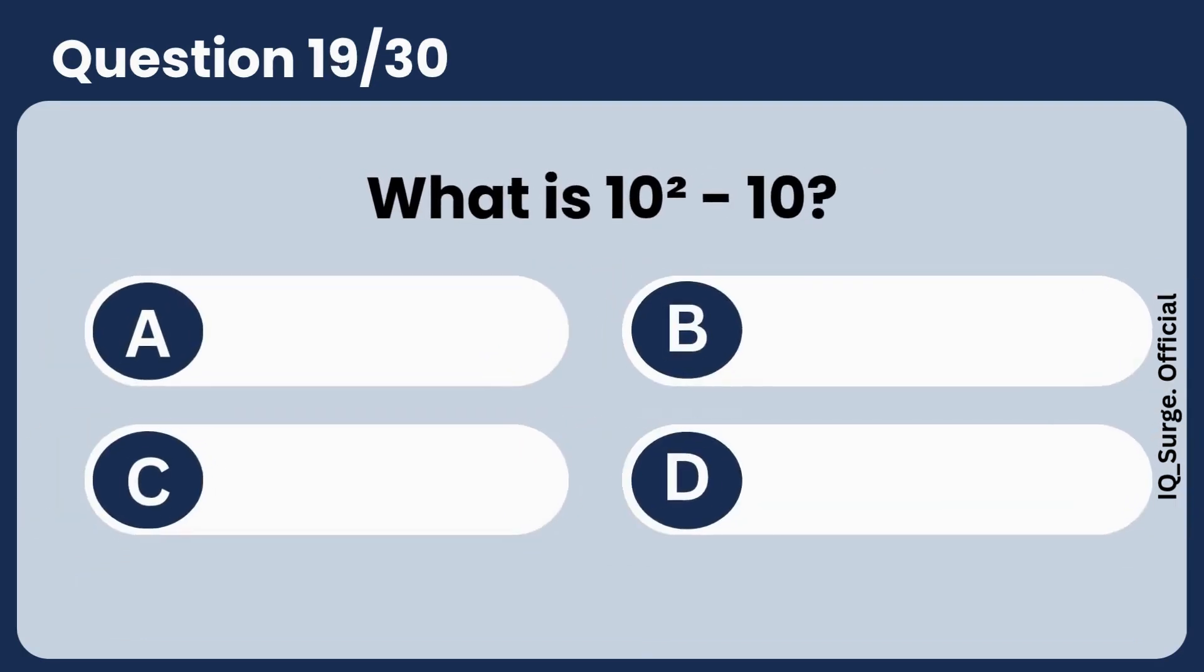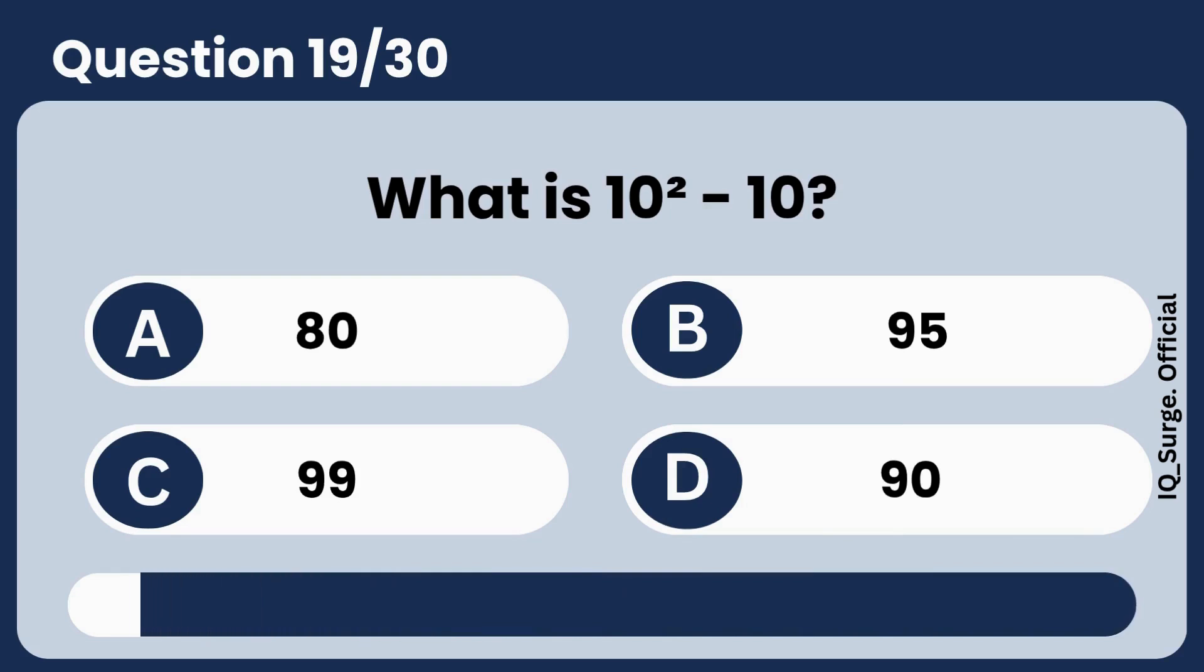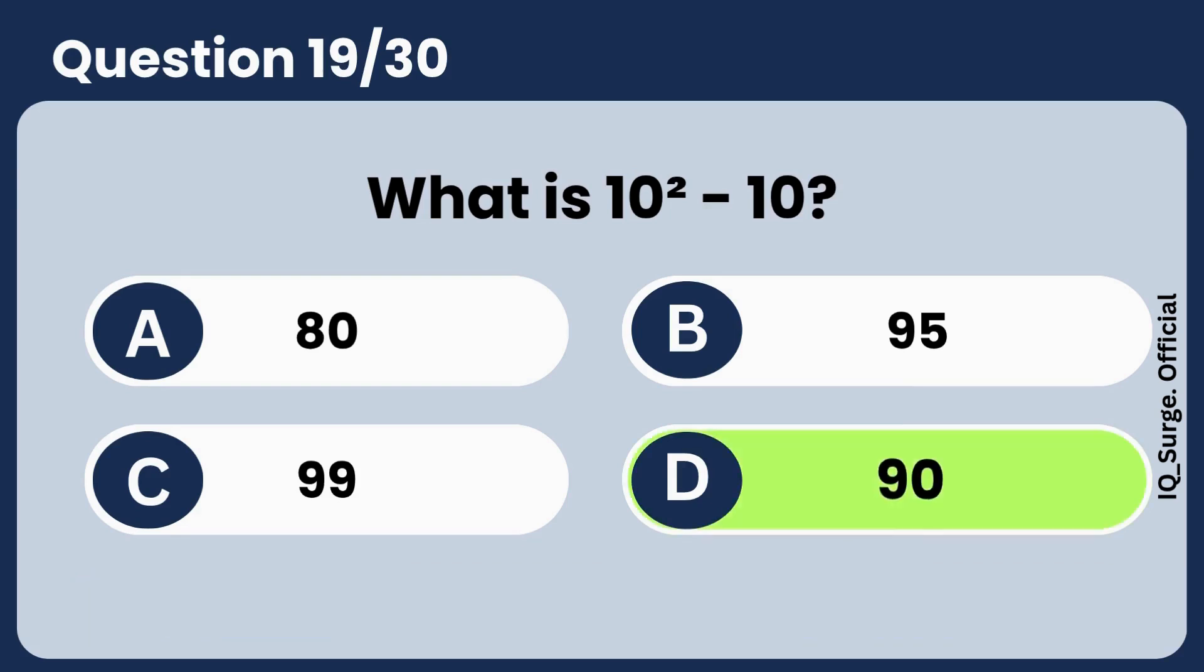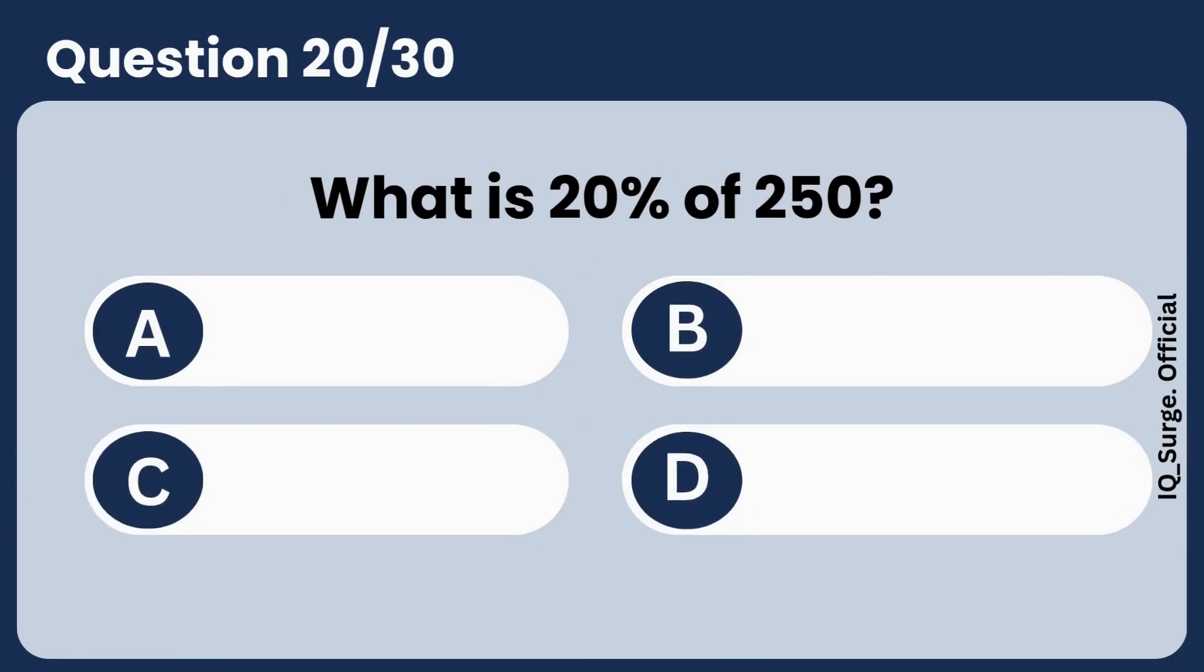What is 10 squared minus 10? Answer D, 90.